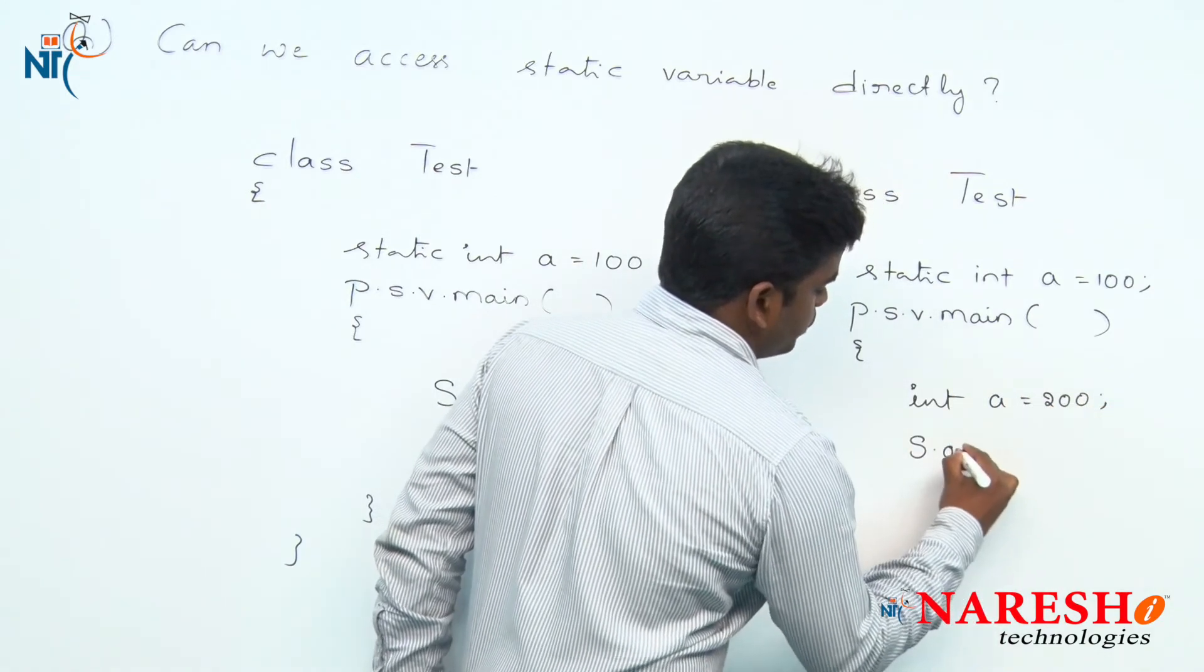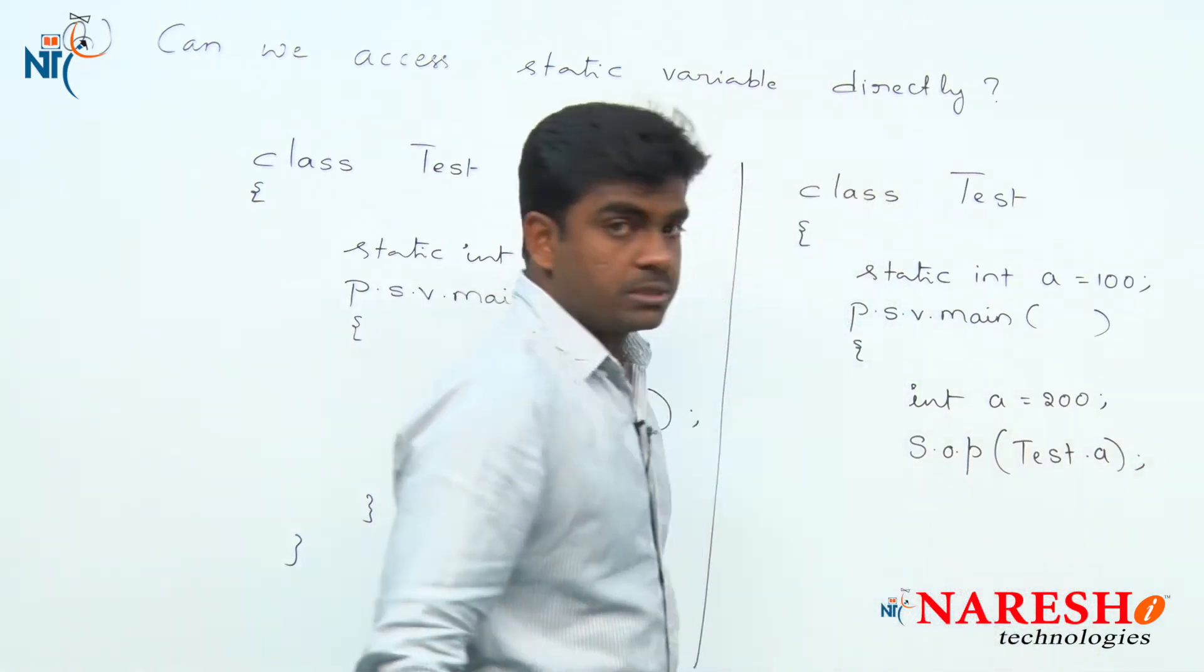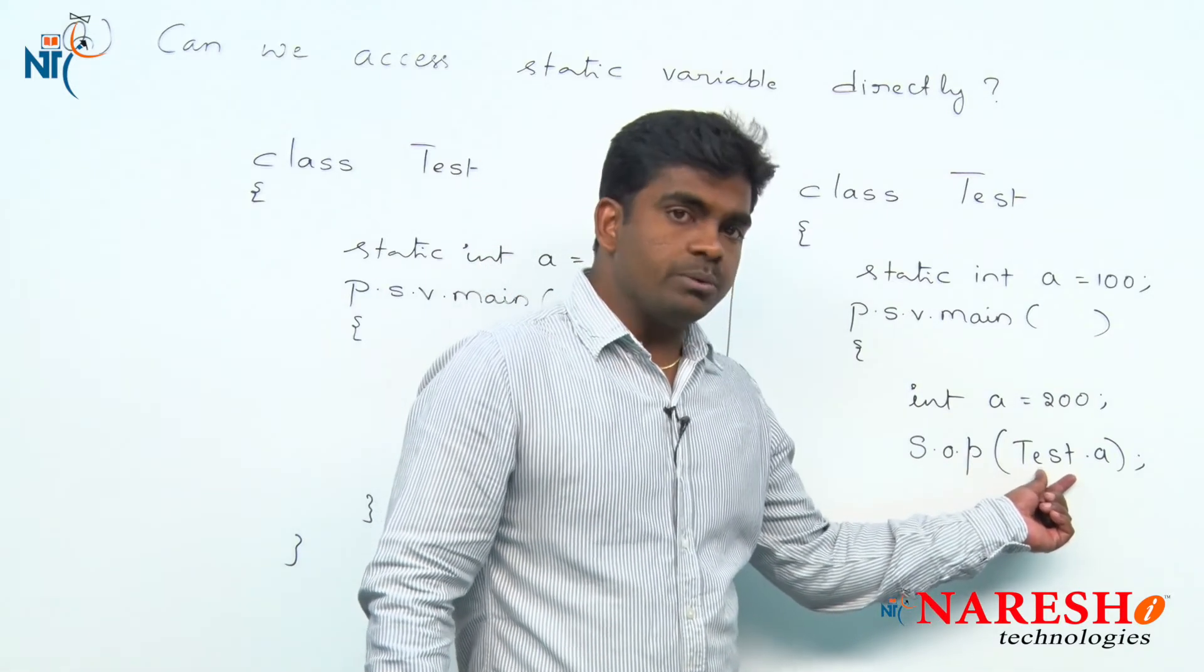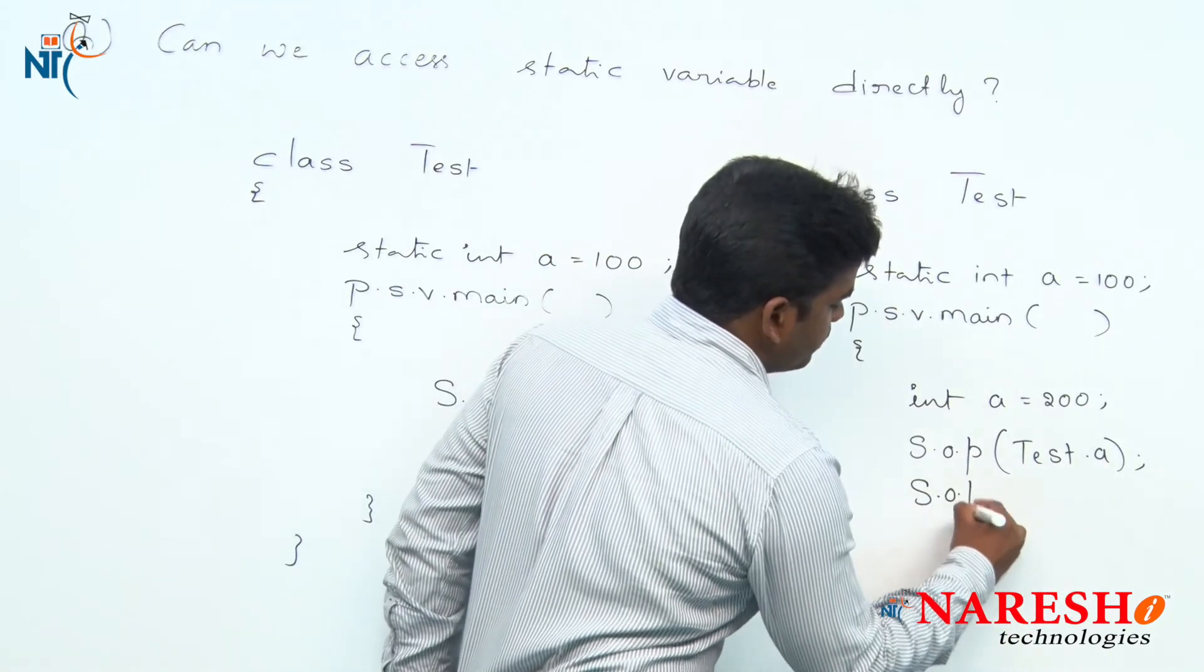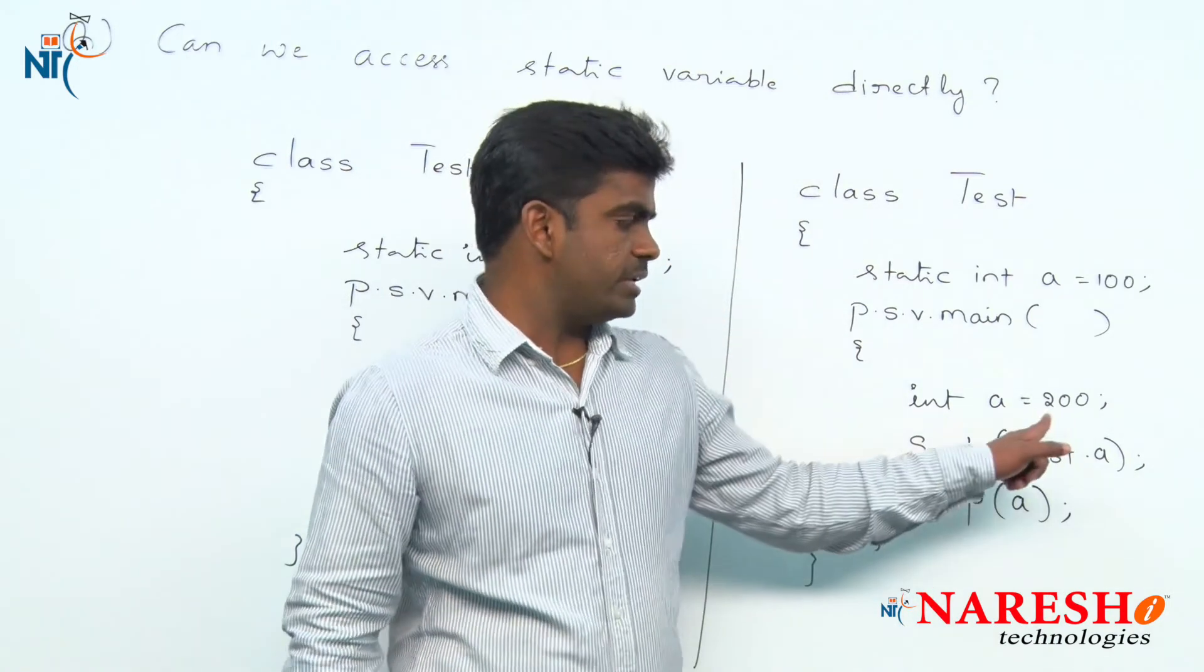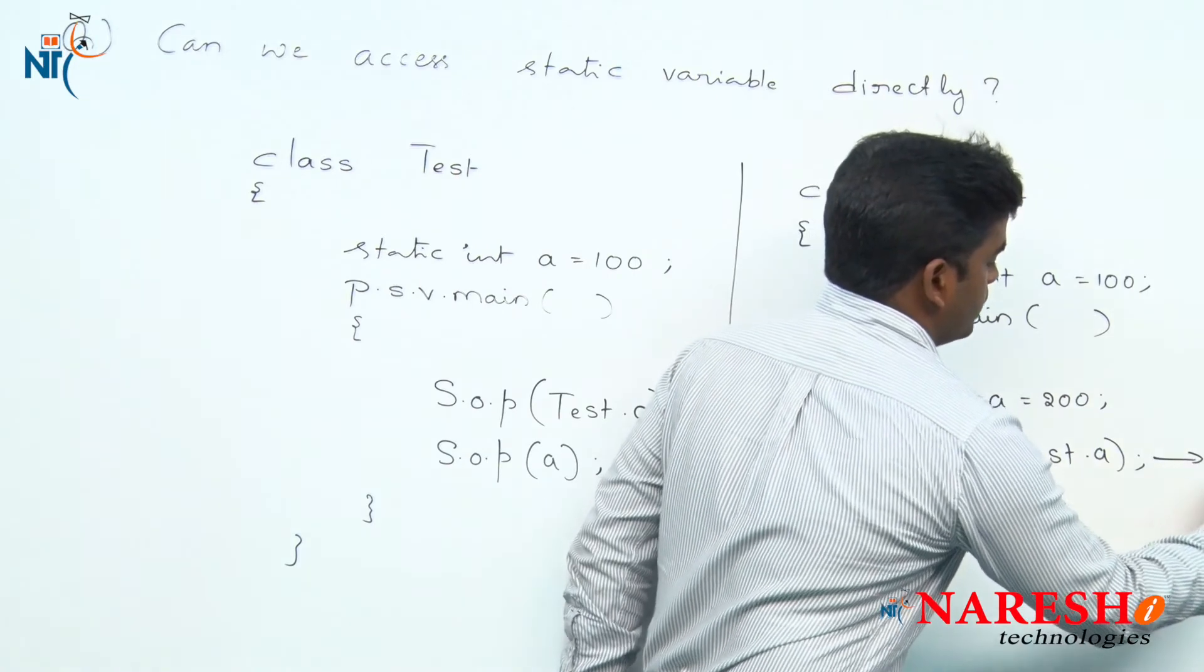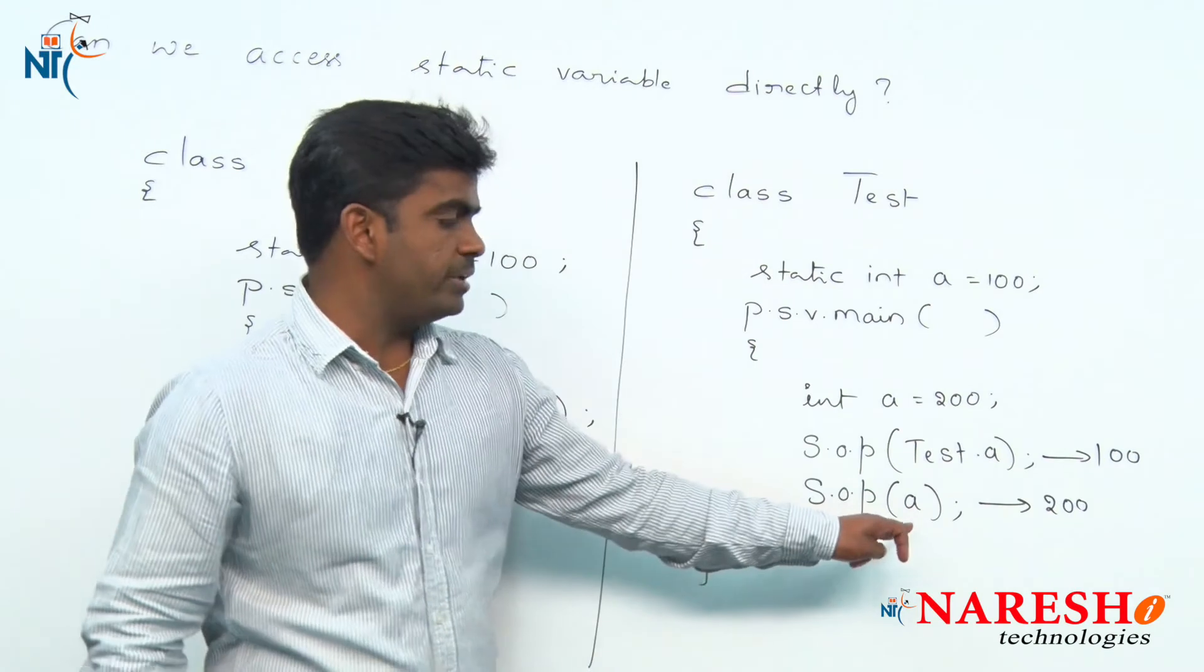With the same name, now we are declaring local variable: int a = 200. Now, if you access variable 'a' using class name, we are following the rules strictly. This directly specifies to access static variable only. But when we try to access directly, first it will give priority to local variable. So Test.a will print 100, but 'a' will print 200 because local variable is present with the same name.